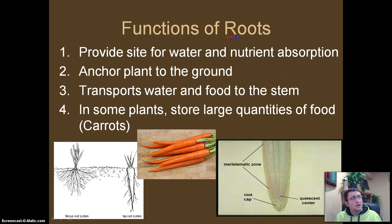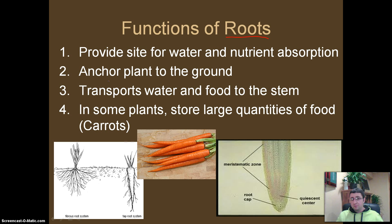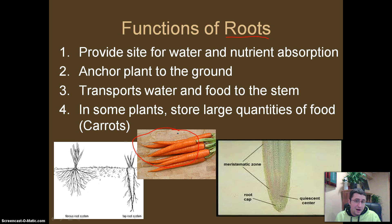Another focus today is going to be on the functions of roots. There are actually several different functions of roots. Primarily, they are the site where water and nutrients are absorbed from the soil. They are also responsible for anchoring the plant to the ground — without roots, the plant would just blow in the wind. Roots are responsible for transporting water up to the stem, and in some plants we can store large quantities of food. When we eat a carrot, we are actually eating part of a modified root.